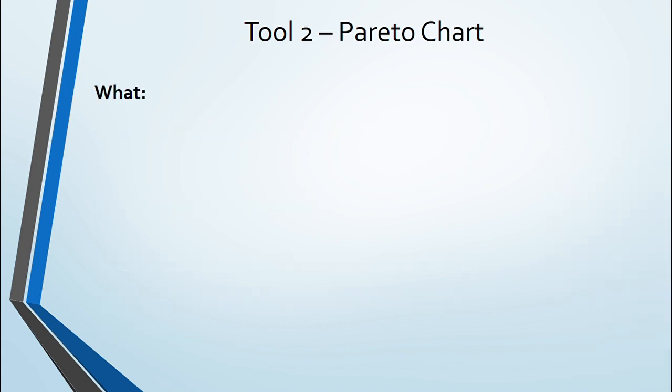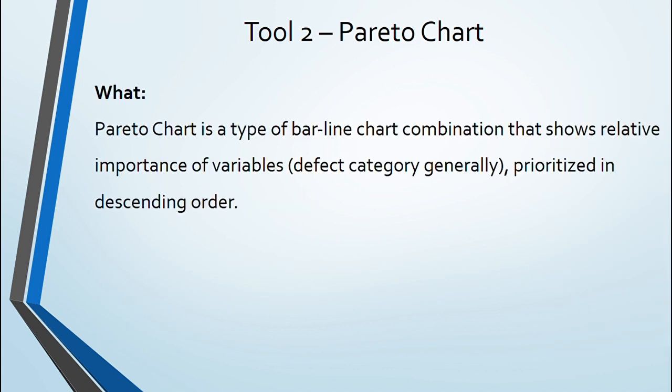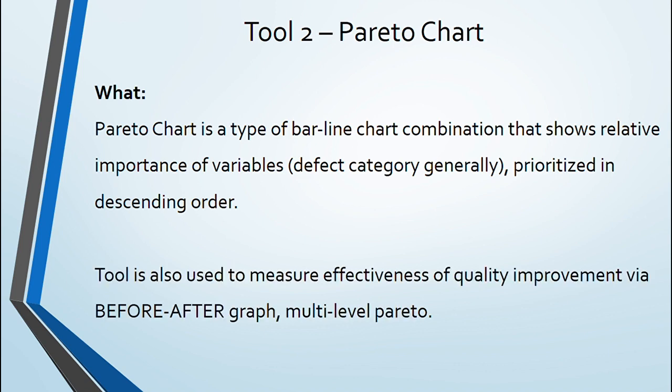So, what is Pareto chart? It is actually a bar-line combination chart that shows relative importance of variables prioritized in descending order. Pareto chart is used to measure effectiveness of quality improvement being performed via before-after graph.